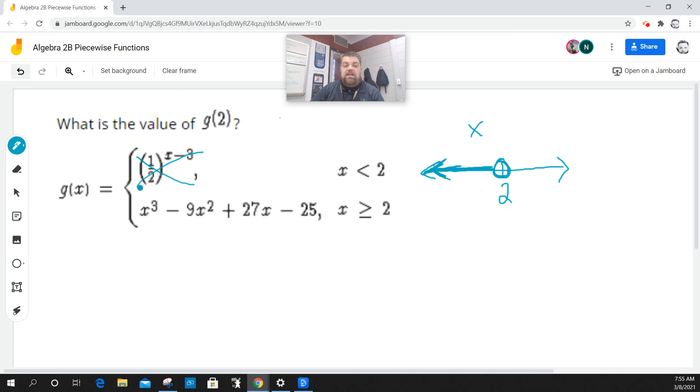So I can't evaluate this. But now if I look at my second part of the piecewise function, it's saying that I can include 2.